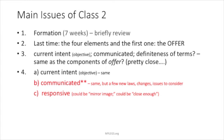So with the offer, it has to have enough definiteness of terms for the acceptance — it's got to be responsive. This is the third component. Or in certain cases, like in the old days or now, if the offeror is very clear on the parameters of acceptance, you can use not 'responsive' but the mirror image rule — requiring exact acceptance rather than something that is merely responsive.